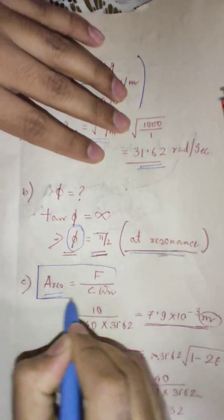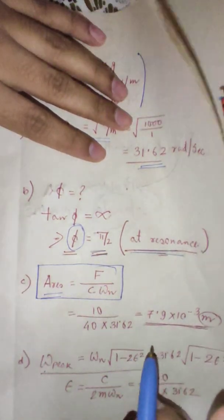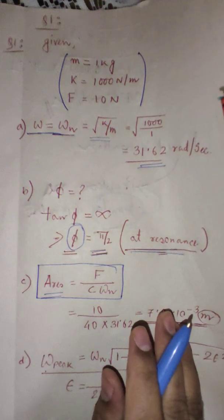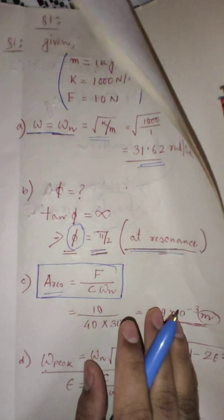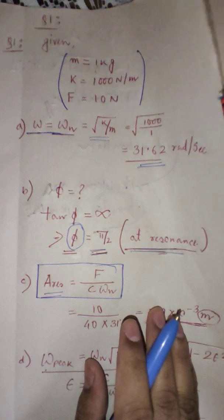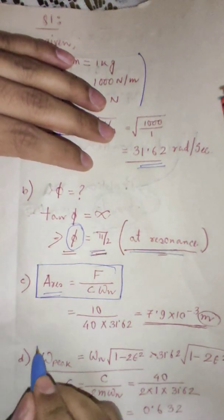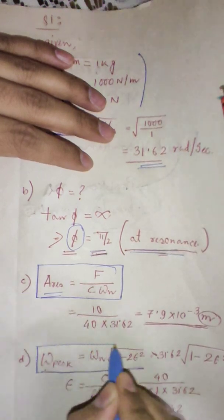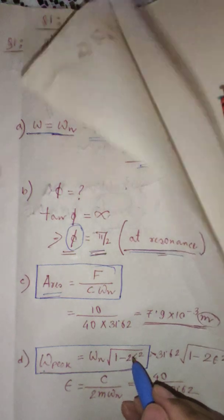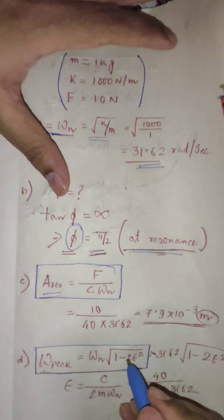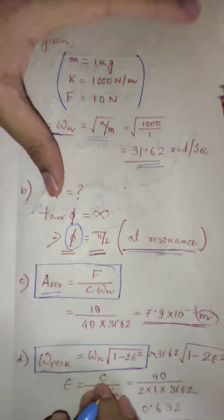This is the formula for finding out the amplitude at resonance. Remember, this is at resonance only. It is not the normal amplitude formula as we have done in the theoretical case. So this is amplitude at resonance. The next formula is the peak frequency corresponding to peak amplitude.